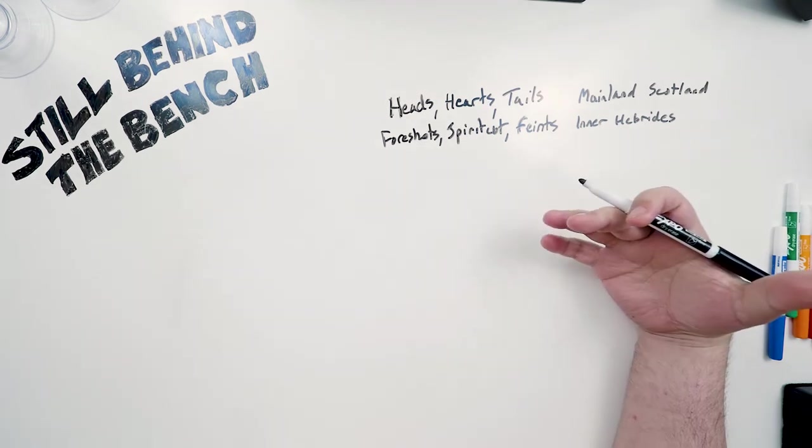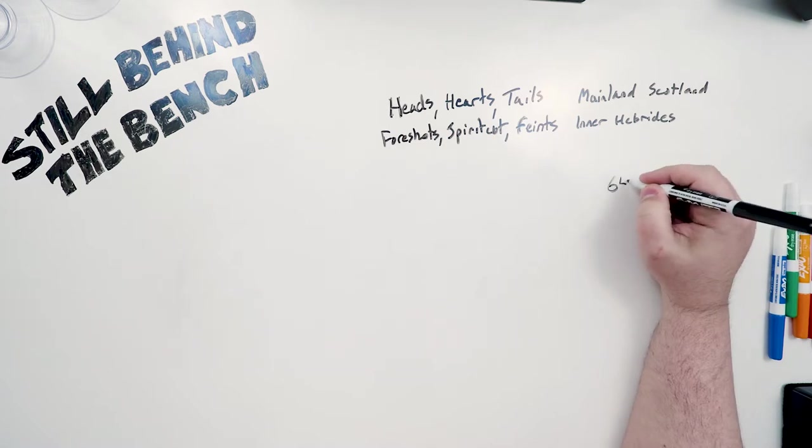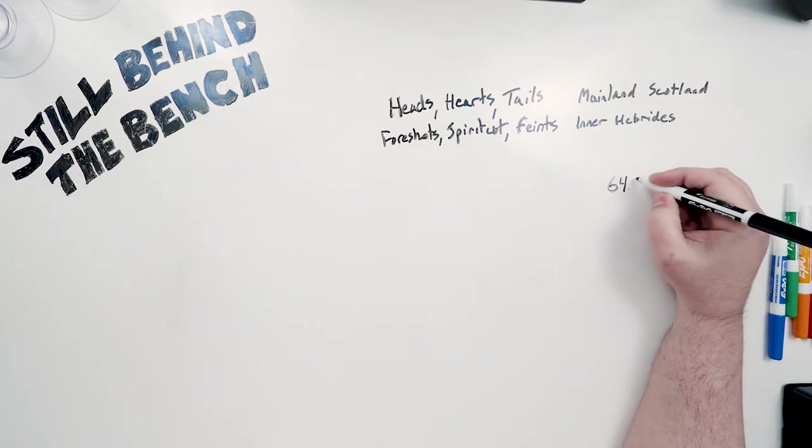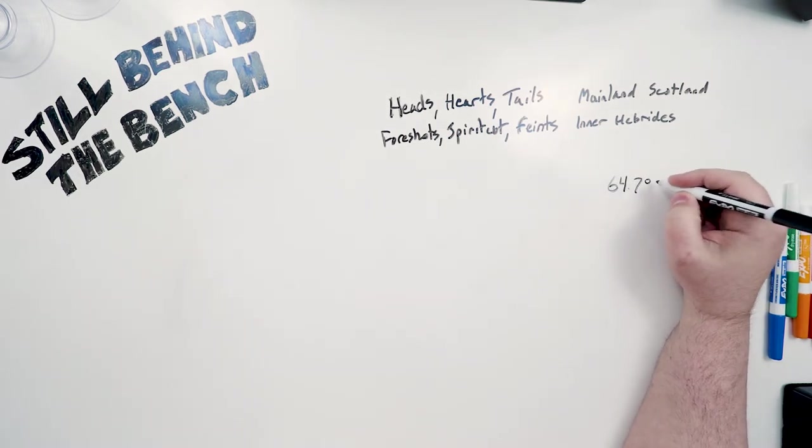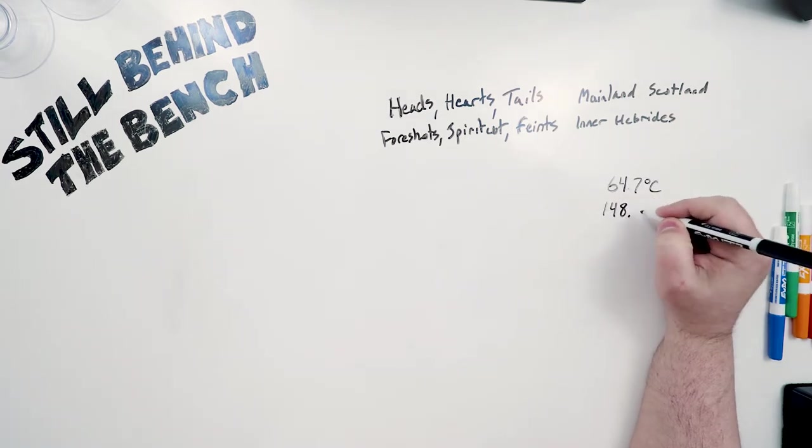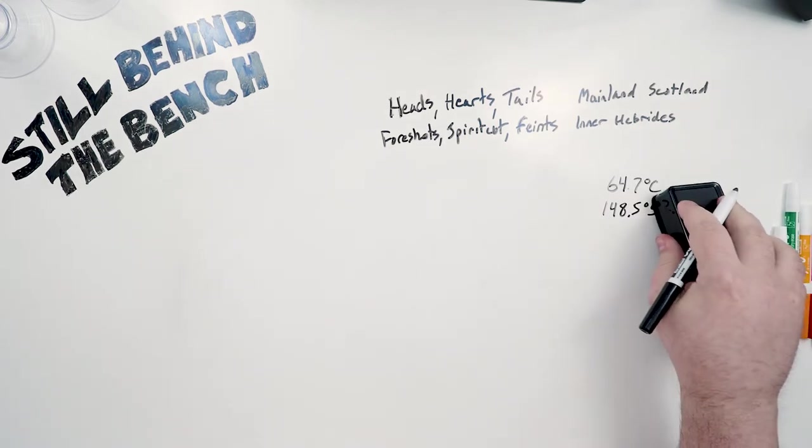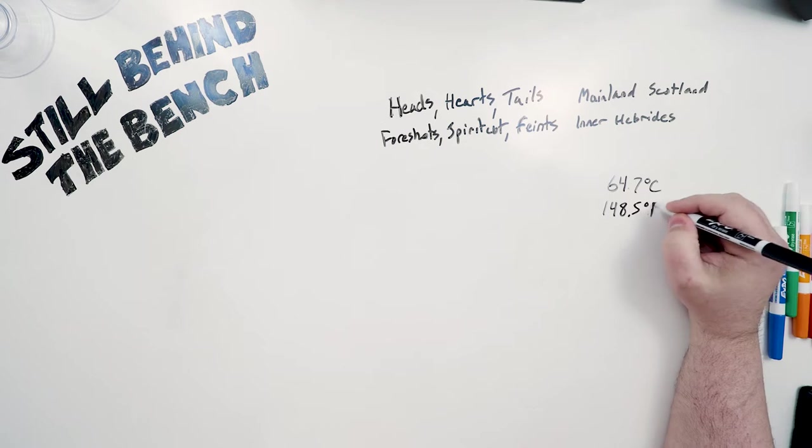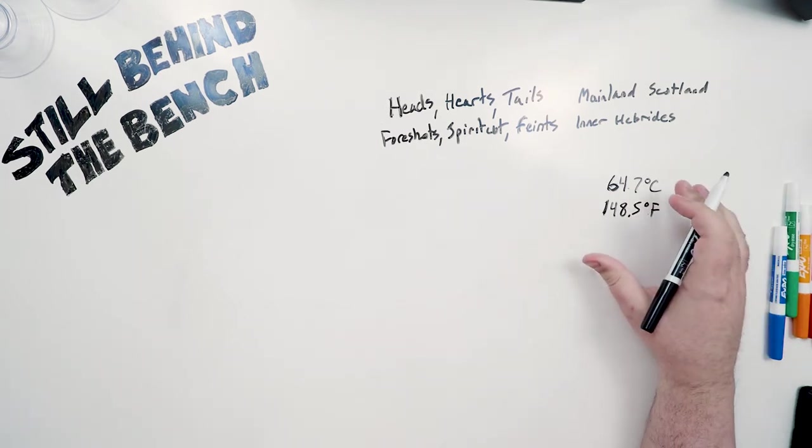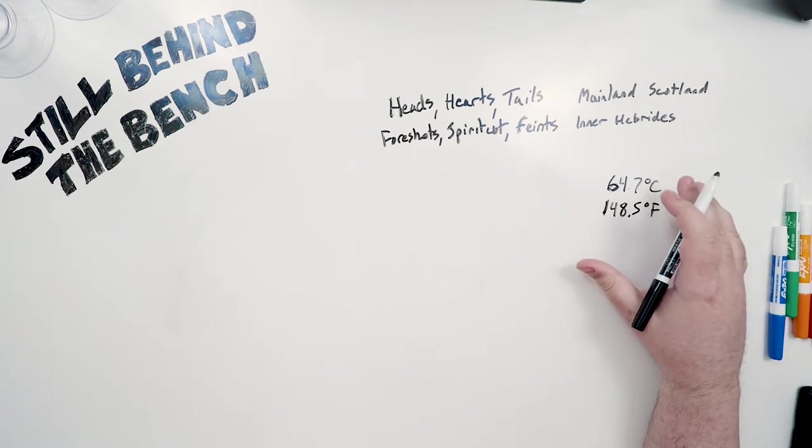So a lot of people will be saying why is methanol coming out in the tails when methanol boils at 64.7 degrees Celsius or 148.5 degrees Fahrenheit. And that's because this is just the boiling point of pure methanol. Nothing else in it. Pure methanol. There's a lot of chemistry going on inside the boiler.